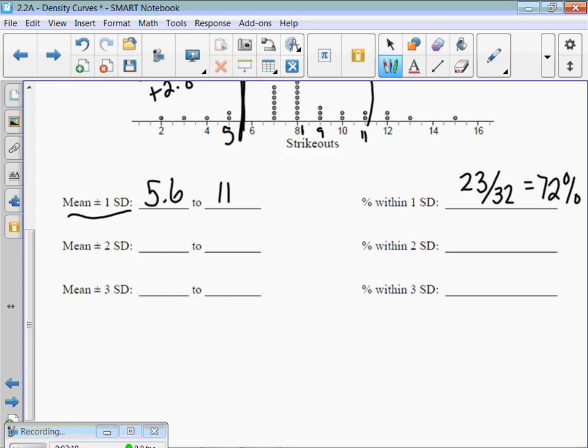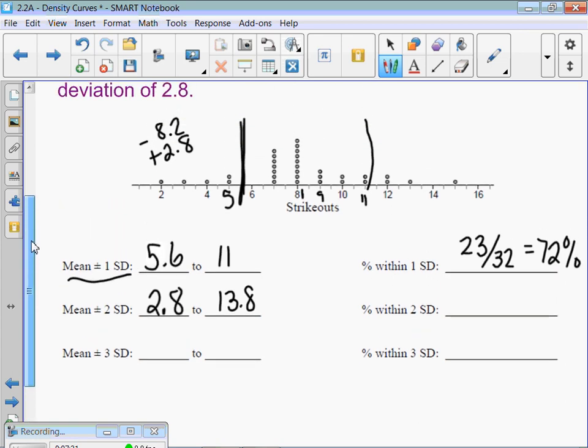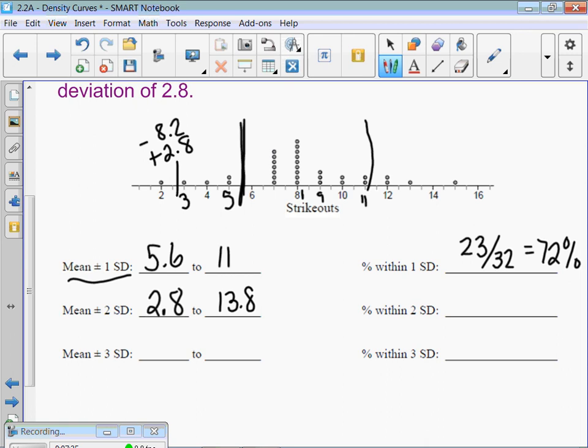Plus and minus 2 standard deviations. So, now I have to add another 2.8. So, I'm adding 2.8 to the mean twice. We get 13.8. Subtract 2.8 right here. 2.8. So, this would be about 2.8 is like right here. And this would be 13. So, almost to 14 right here. Now, I want to know how much data is within two standard deviations of the mean. So, we have the 23 dots. Plus, we're going to add these four and these three. And we get 30 dots out of 32. So, what percent of the data is that? 94.